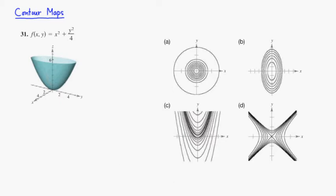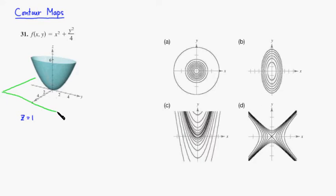So the plane looks like this — it's going to be one notch above the x-y plane. See if you can visualize this. This is the plane z equals 1.